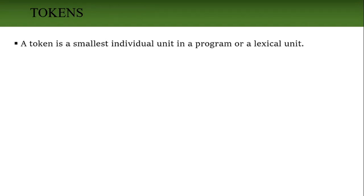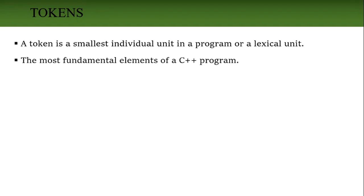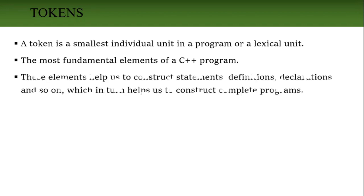Now we will see the token. A token is nothing but the smallest unit in the program, also called the lexical unit. It is the most fundamental element — by using these tokens only, we write the code of the program. We are writing the programs, developing software. By using these elements we can write statements, define variables, define functions.